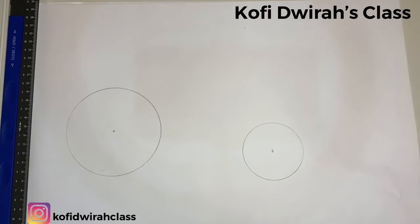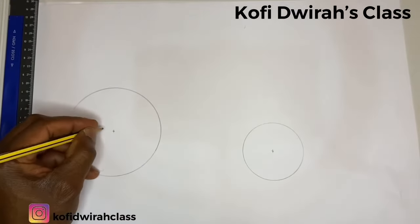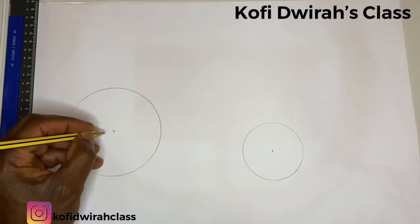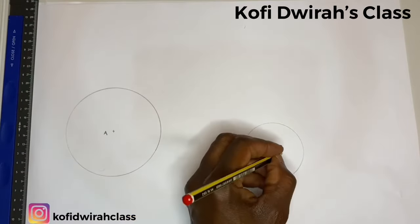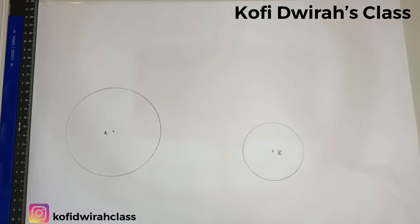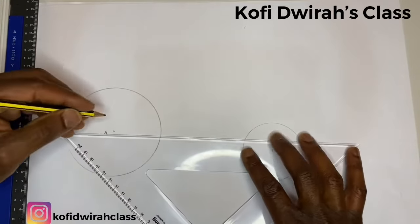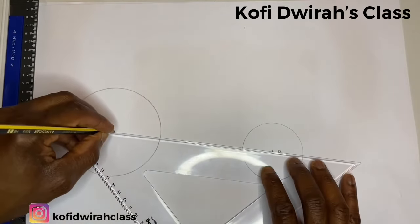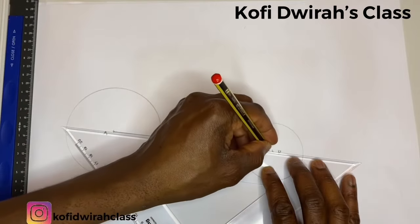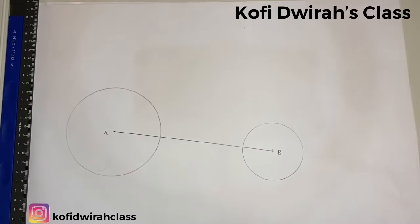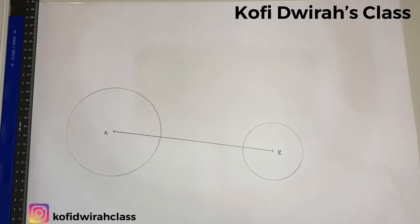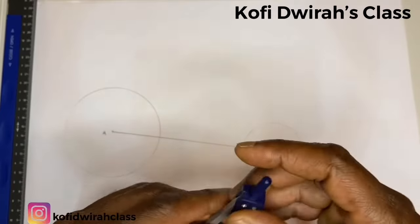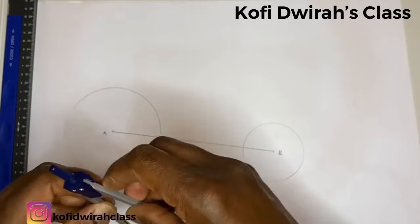Then we draw a straight line. You can name this point to be point A and B. So draw your straight line from A to B. Good, so we have our straight line, then we bisect line AB.